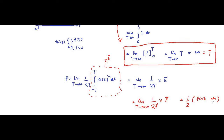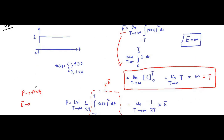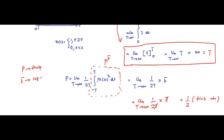So here power is finite and energy is infinite. This means the unit step signal is a power signal. Power is finite and energy is infinite — this is the condition for a power signal. Therefore the unit step signal is a power signal.